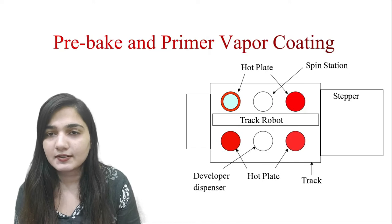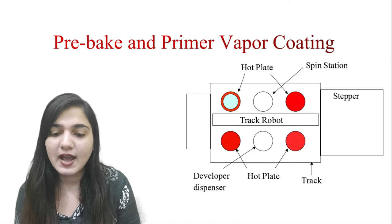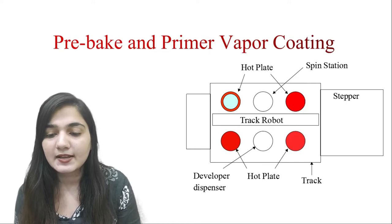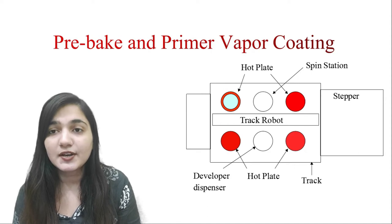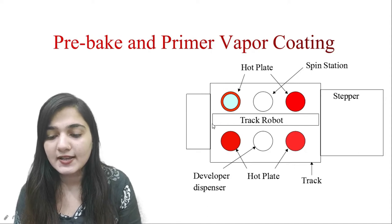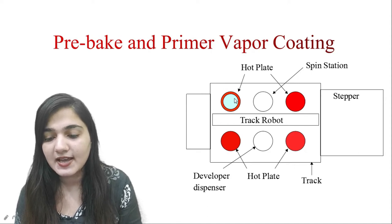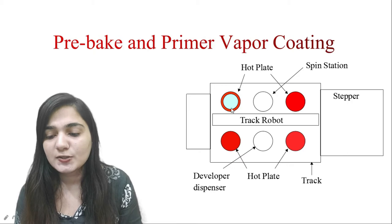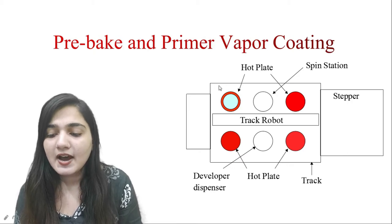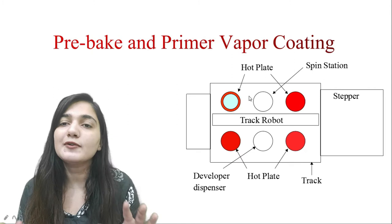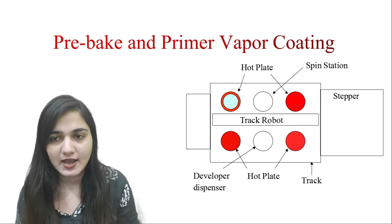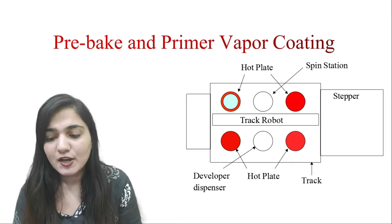After this process we have the pre-bake and the primer coating. At this hot plate we are doing the pre-bake process. The robot takes the wafer inside to this pre-bake process. This is a hot plate, and after this hot plate we always have a chill plate.